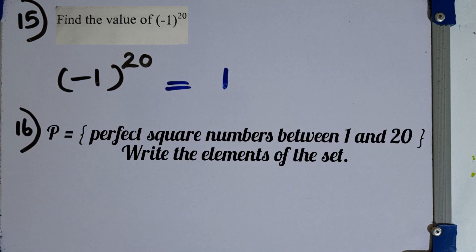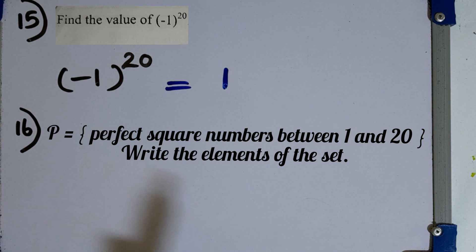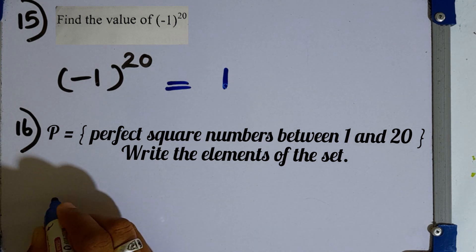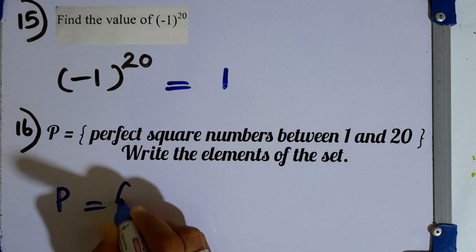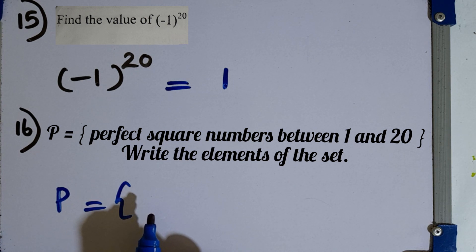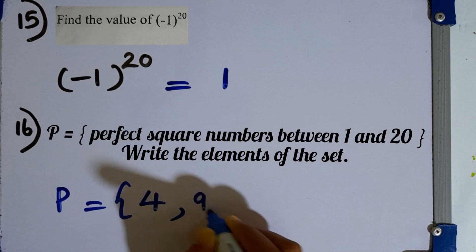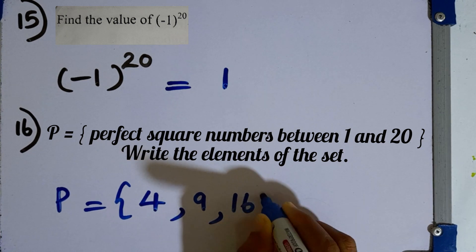Question number 16. P is a set of perfect square numbers between 1 and 20. Write the elements of the set. Since it is given as between 1 and 20, we cannot take 1 or 20 themselves. The perfect square elements are 4, 9, and 16.